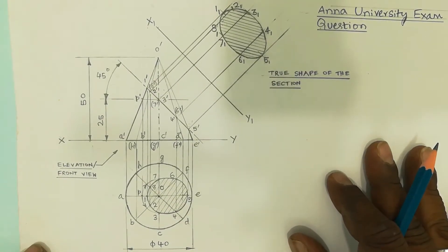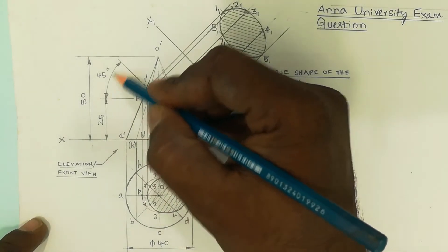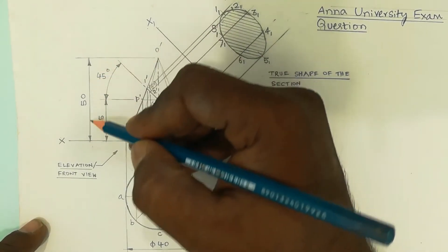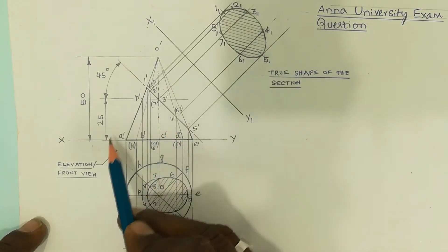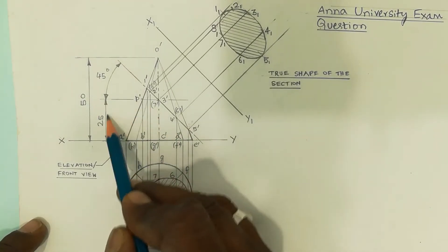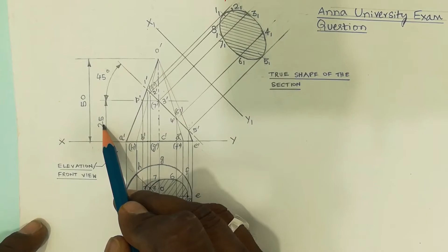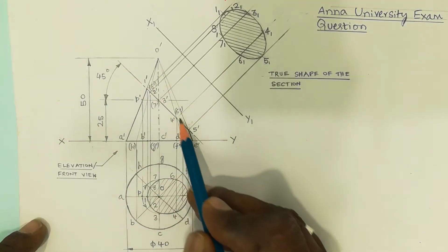Please see the description part of this video. The next dimension — dimensioning carries marks. The total height of the cone is 50 mm. The cutting plane is 25 mm from the base, so that is also indicated. Next, 45 degrees is the angle of inclination of the cutting plane.